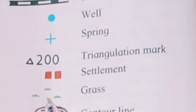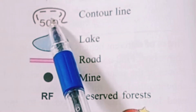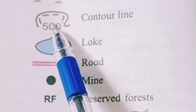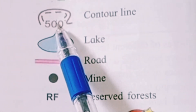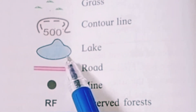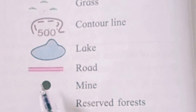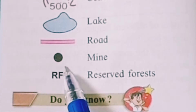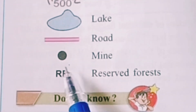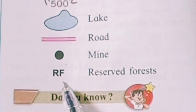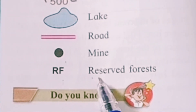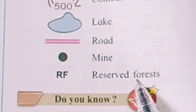Grass. G-R-A-S-S. Grass. Contour Line. C-O-N-T-O-U-R L-I-N-E. Contour Line. Lake. L-A-K-E. Lake. Road. R-O-A-D. Road. Mine. M-I-N-E. Mine. Reserve Forest. R-E-S-E-R-V-E F-O-R-E-S-T. Reserve Forest.